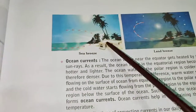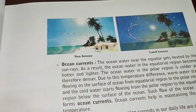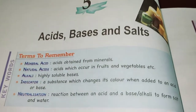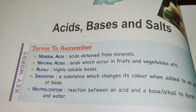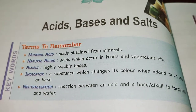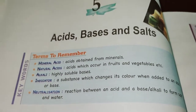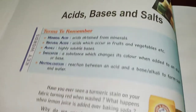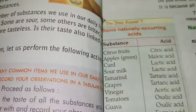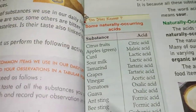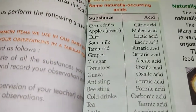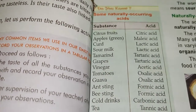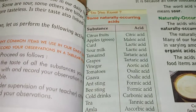Chapter 5: Acids, Bases and Salts. I believe Miss Pratima has already given you what to do. You have already been given the activity, so you have to complete it. Along with that, please write down the table of some naturally occurring acids. Thank you very much — see you in the next class.